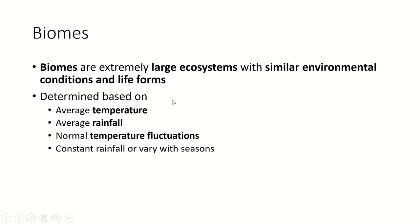A desert is an example of a biome. Biomes are categorized based on their average temperature throughout the year, the average for each season, the average rainfall in a given season or year, and how much the temperature fluctuates. Temperatures at the equator don't fluctuate very much, but closer to the poles there can be really big fluctuations. Rainfall may be constant or confined to a certain season — for example, we live in a chaparral biome that gets a lot of rain in the winter and very little to no rain in the summer.